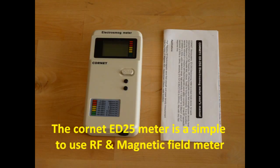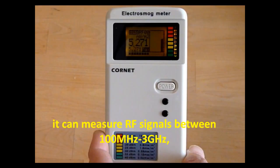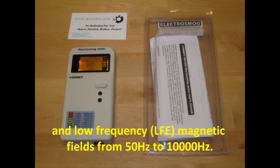The Cornet ED25 meter is a simple to use radio frequency and magnetic field meter. It can measure radio frequency signals between 100 MHz and 3 GHz, and low frequency magnetic fields from 50 Hz to 10,000 Hz.